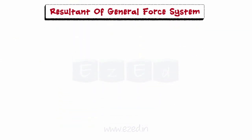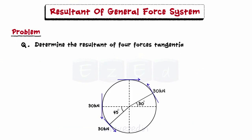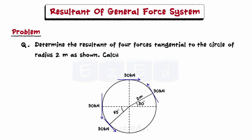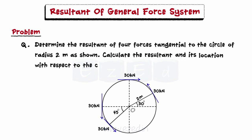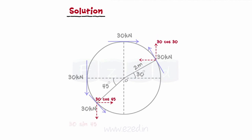Let's consider the following problem. Determine the resultant of four forces tangential to the circle of radius 2 meters as shown. Calculate the resultant and its location with respect to the center of the circle.